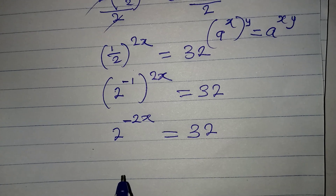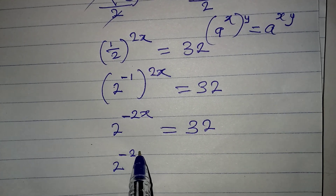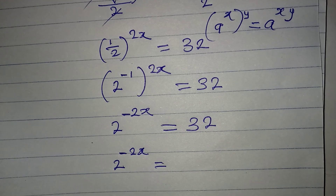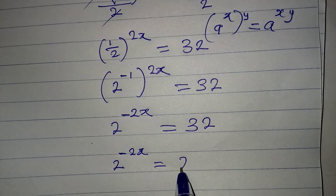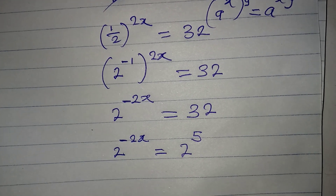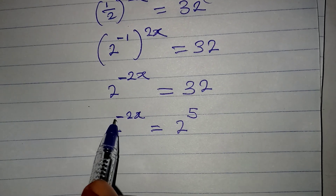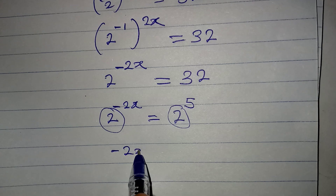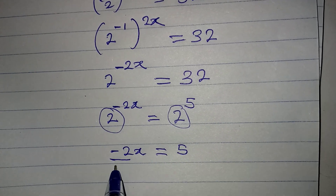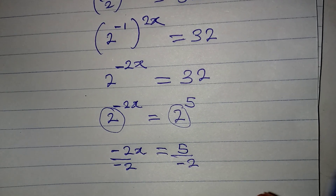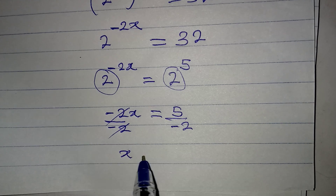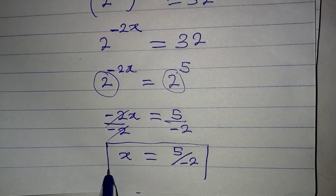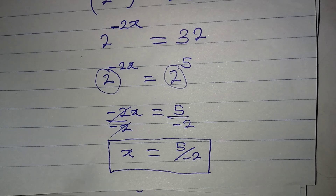Now 32 can be written as a power of 2. Since 2 to the power of 5 equals 32, we have 2 to the power of negative 2x equals 2 to the power of 5. Since the bases are the same, we can equate the exponents: negative 2x equals 5. Dividing both sides by negative 2, x equals 5 over negative 2, which is minus 5 over 2.